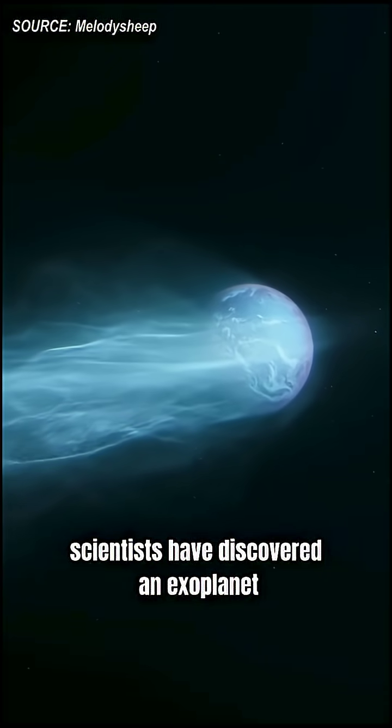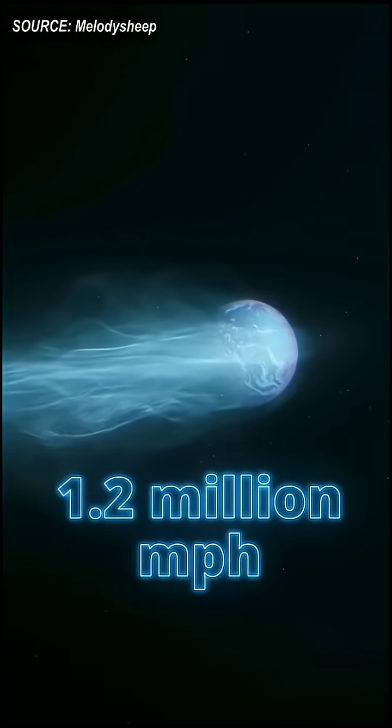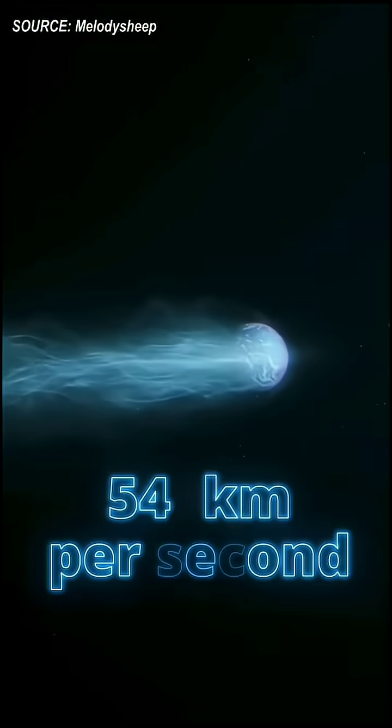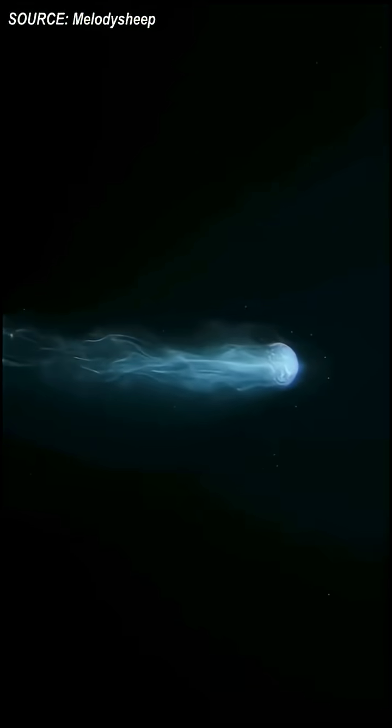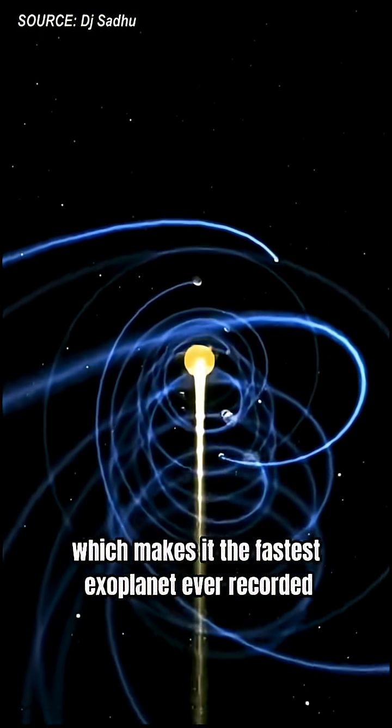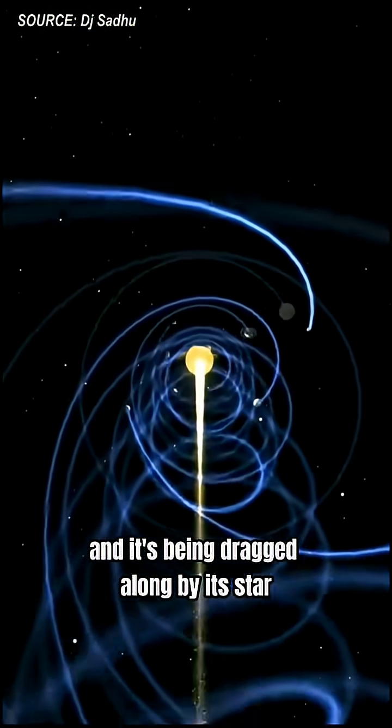Scientists have discovered an exoplanet traveling 1.2 million miles per hour, or 540 kilometers per second, which makes it the fastest exoplanet ever recorded, and it's being dragged along by its star.